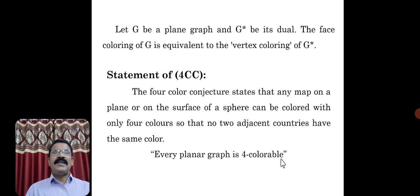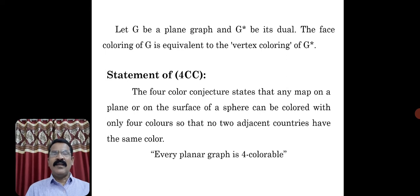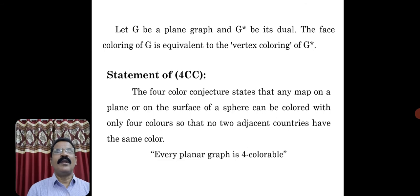Let G be a plane graph — the map, that is the plane graph — and G* be its dual. You know how to construct the dual of a plane graph. The face coloring of G is equivalent to the vertex coloring of G*, because in the dual, every face corresponds to a vertex. The vertices of the dual are the faces of the plane graph G.